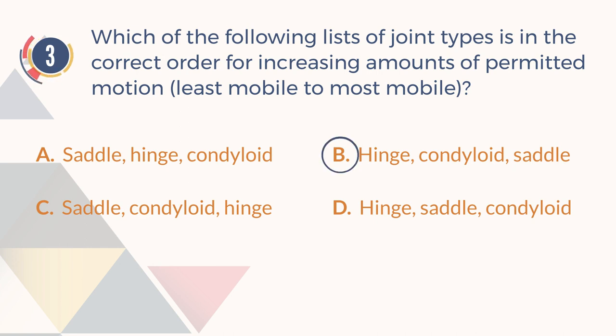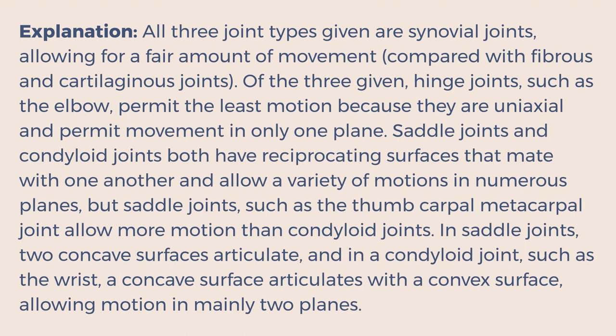The correct answer is B. Hinge, condyloid, saddle. Explanation: All three joint types given are synovial joints, allowing for a fair amount of movement compared with fibrous and cartilaginous joints. Of the three given, hinge joints, such as the elbow, permit the least motion because they are uniaxial and permit movement in only one plane. Saddle joints and condyloid joints both have reciprocating surfaces that mate with one another and allow a variety of motions in numerous planes, but saddle joints, such as the thumb carpal metacarpal joint, allow more motion than condyloid joints. In saddle joints, two concave surfaces articulate, and in a condyloid joint, such as the wrist, a concave surface articulates with a convex surface, allowing motion in mainly two planes.